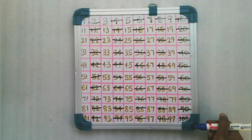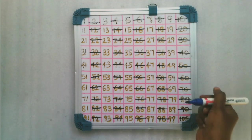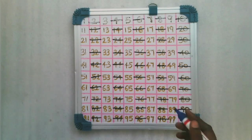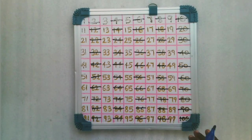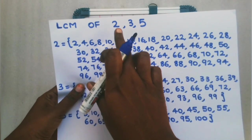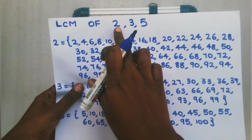So those are the multiples of 2 up to 100 — those numbers get a horizontal line strike. The 2 times table is now complete.